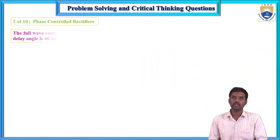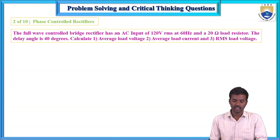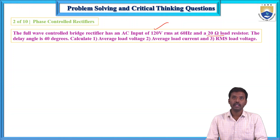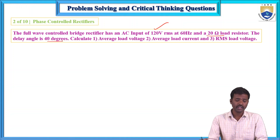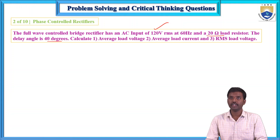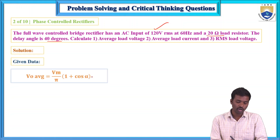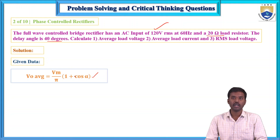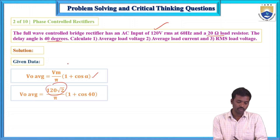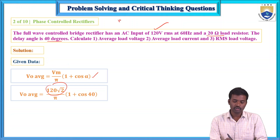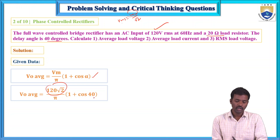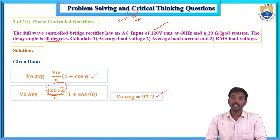Second question: a full-wave controlled bridge rectifier has an AC input voltage of 120 volts RMS at 60 Hz, a 220 ohm load resistor, and a firing angle of 40 degrees. Calculate the average load voltage, average load current, and RMS load voltage. The average value formula for a full-wave rectifier is: V_avg = (Vm / π)(1 + cos α), where α equals 40 degrees and Vm equals 120√2. Substituting gives V_avg equals 97.2 volts.